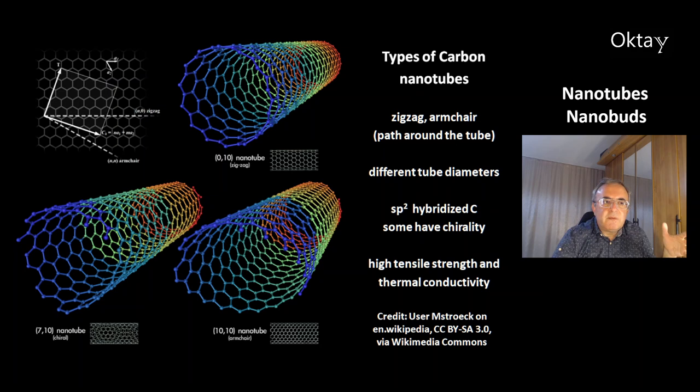Some have chirality. This means for some of the nanotubes there is a mirror image that is not identical with the other version, like left hand and right hand. The carbon nanotubes are known for high tensile strength and thermal conductivity.